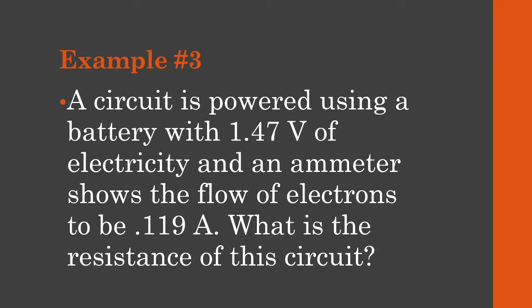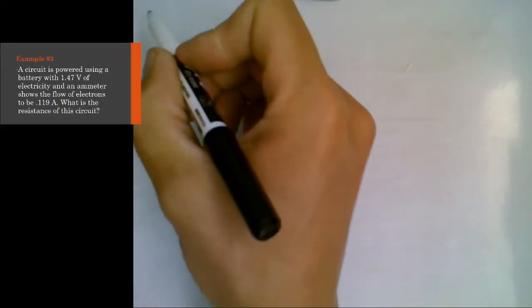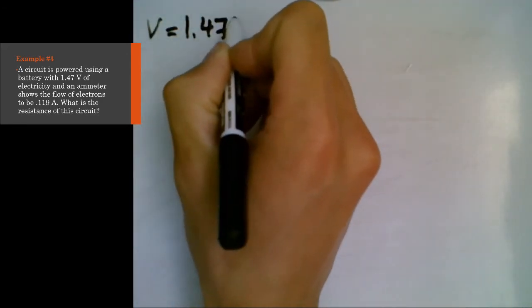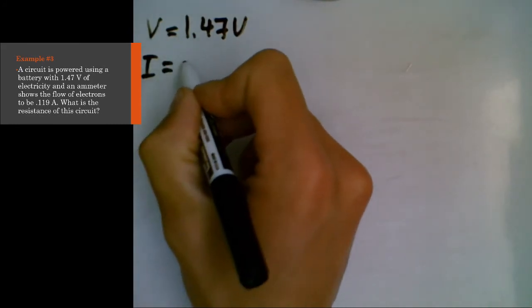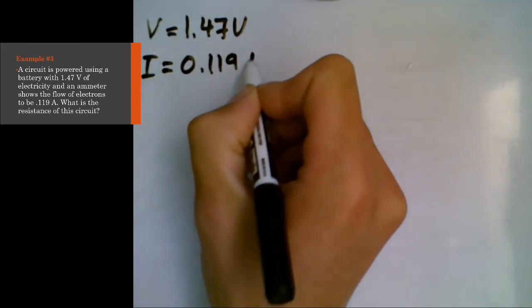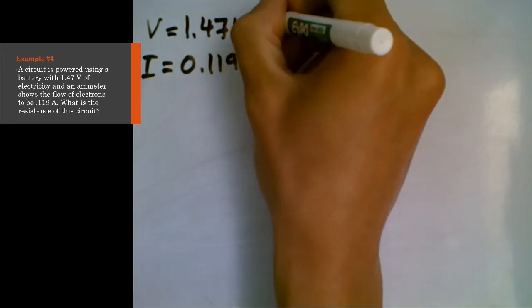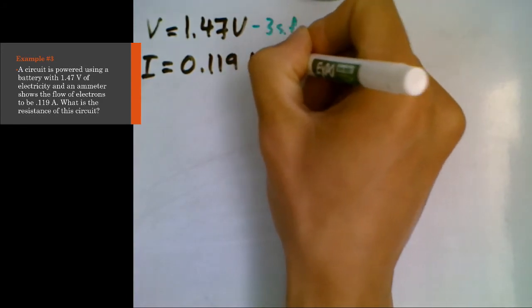In our last example, we are given a circuit that's powered using a battery that has 1.47 volts of electricity. And there's an ammeter, so that measures amps, that shows the flow of electrons to be 0.119 amps. What is the resistance? So as we do this, as always, organize your information.